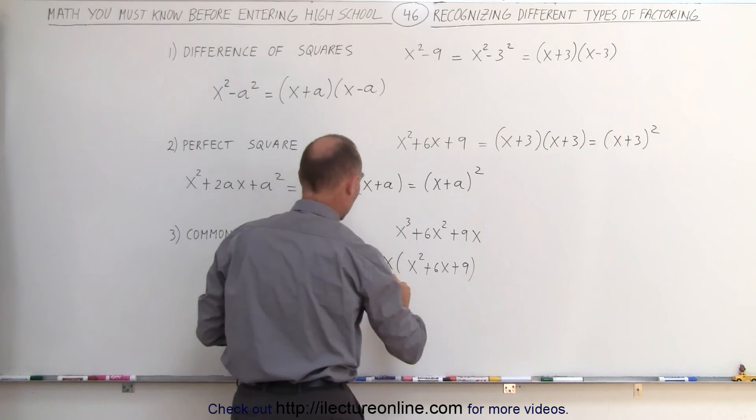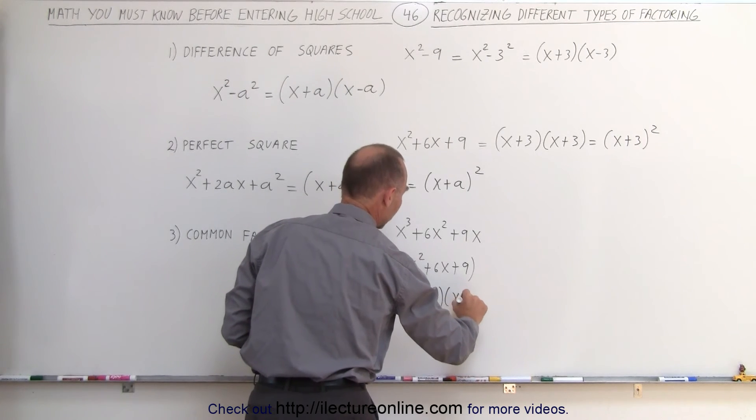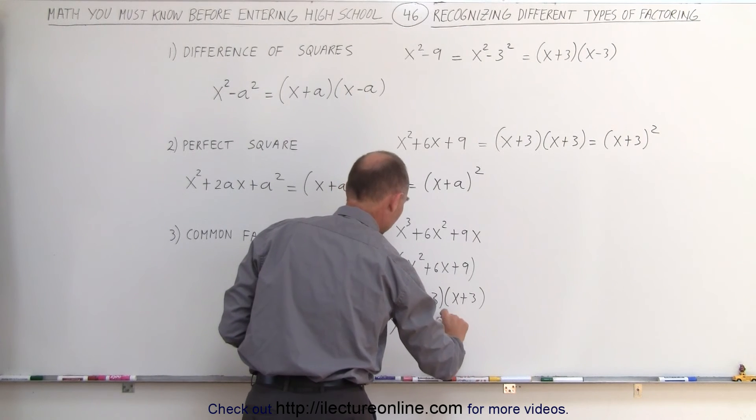In other words, this can now be written as x times x plus 3 times x plus 3, or simply x times x plus 3 quantity squared.